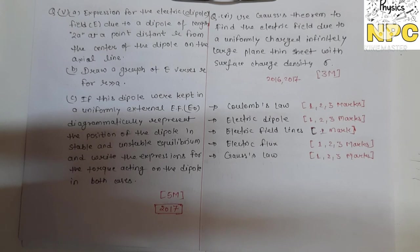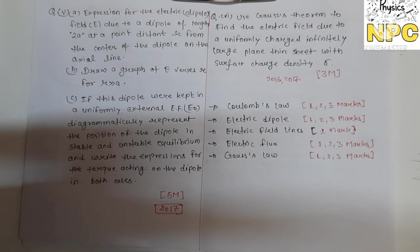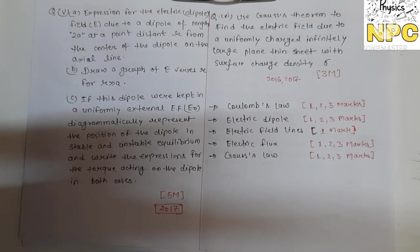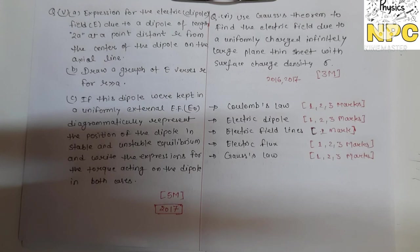Next: use Gauss's theorem to find the electric field due to a uniformly charged, infinitely large plane sheet. Using the application of Gauss's law, derive that expression. This is a 3-mark question. If it were 5 marks, you would need to prove Gauss's law first and then apply it. For 3 marks, only the application for an infinitely large plane sheet is required. This question appeared in 2017.